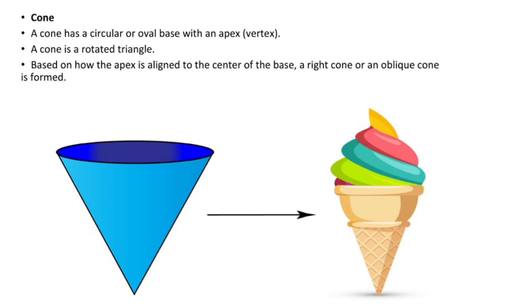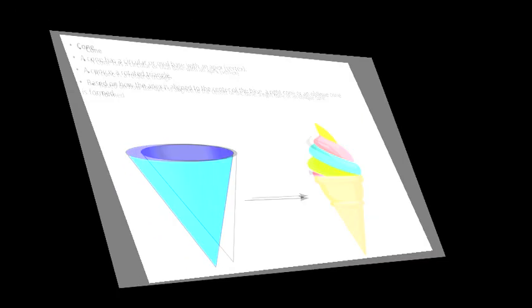Now, cone. A cone has a circular or oval base with an apex, or vertex. A cone is a rotated triangle. Based on how the apex is aligned to the center of the base, a right cone or an oblique cone is formed. See, children, our ice cream is in the shape of a cone.